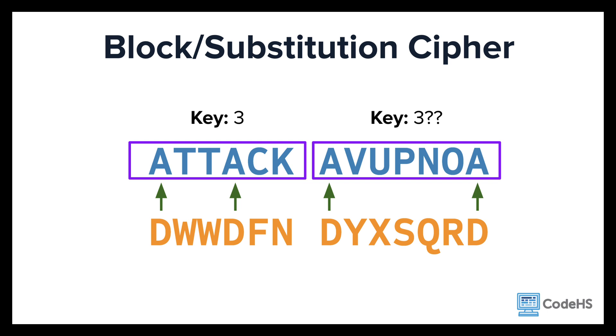It's still not the best, though. In this example, they would only need to try up to 52 different keys — 26 for each block — to be able to crack the code.